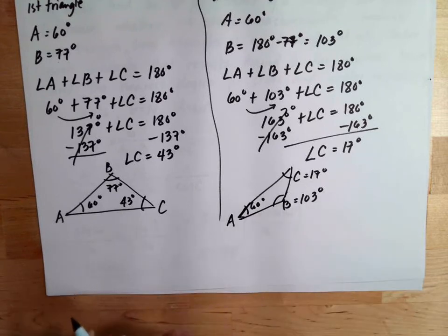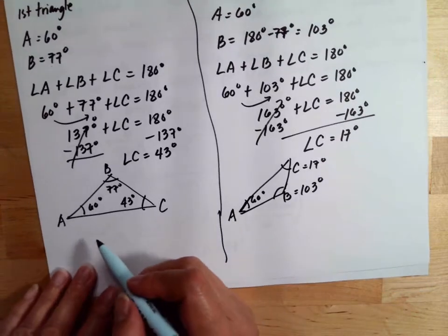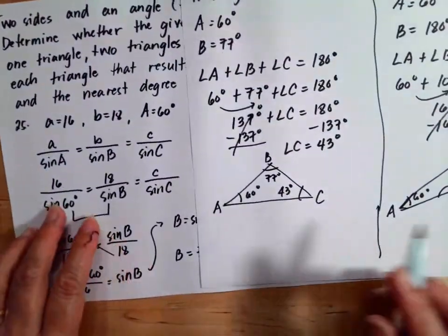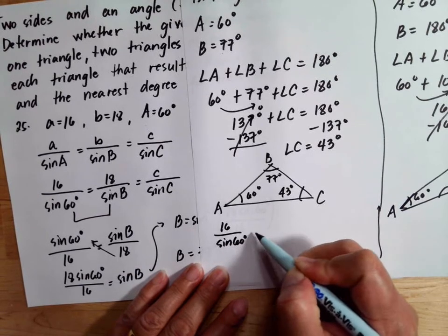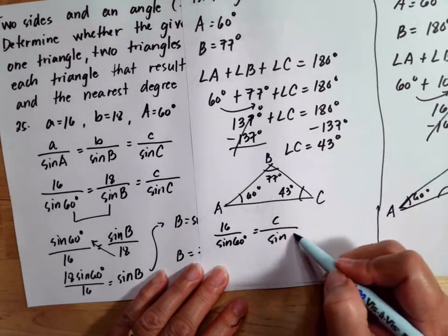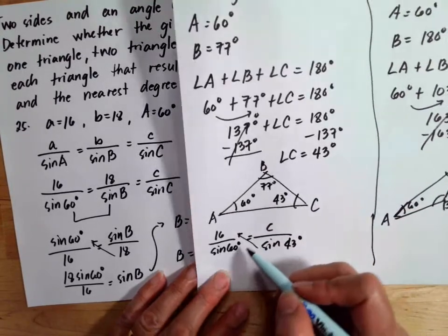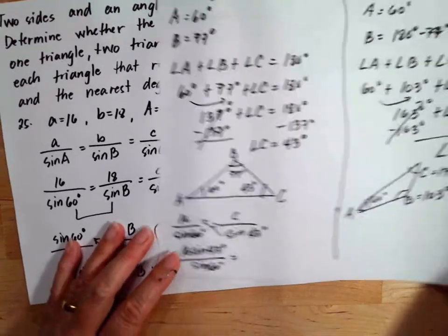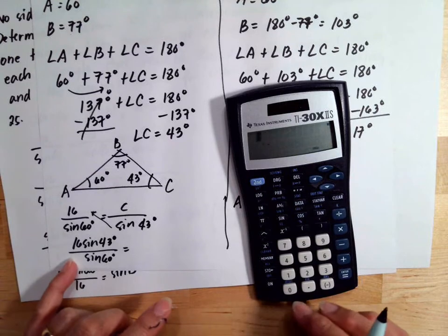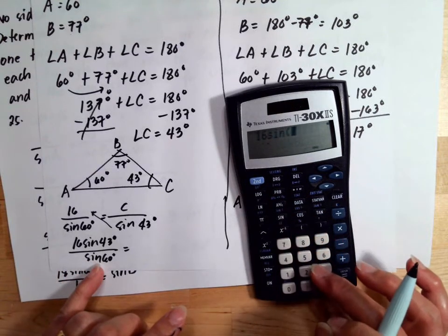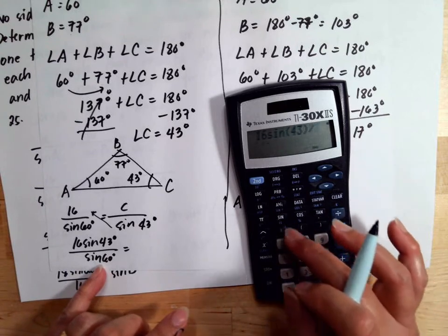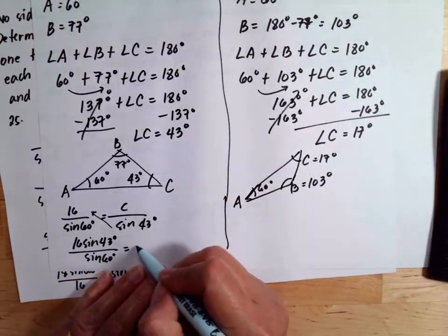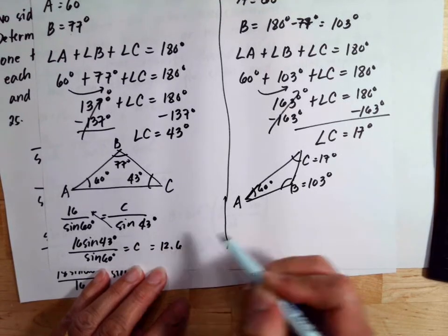Now solve for side c of each triangle. For the first triangle, using the proportion 16 over sine 60 degrees equals c over sine 43 degrees. Cross multiplying gives c equals 16 sine 43 degrees over sine 60 degrees. This equals 12.6, so side c of the first triangle is 12.6.